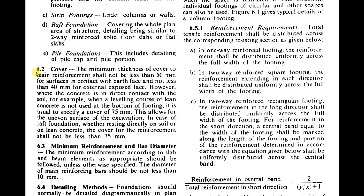As per clause 6.2, the minimum cover to main reinforcement shall not be less than 50 mm for surfaces in contact with earth face and not less than 40 mm for external exposed face. However, where the leveling course of lean concrete (PCC) is not used at the bottom of the footing, the cover shall be 75 mm.